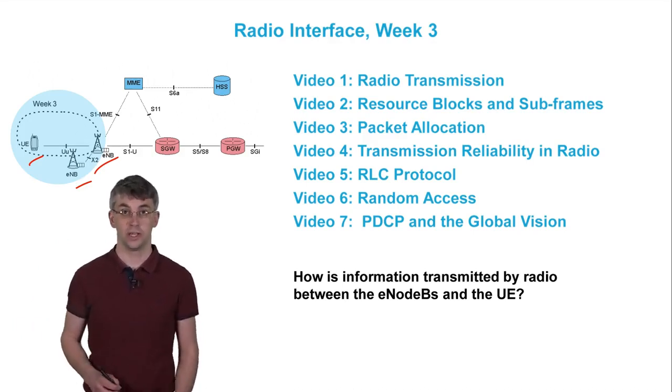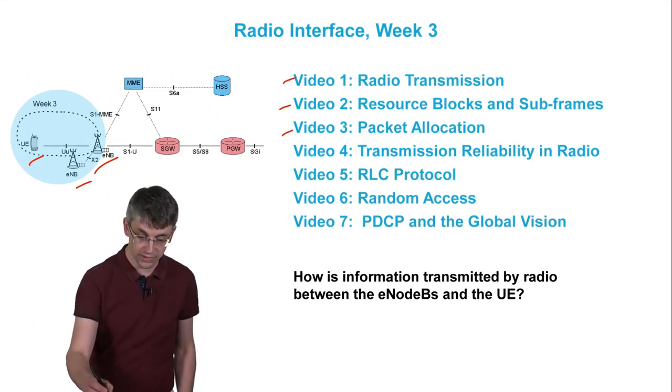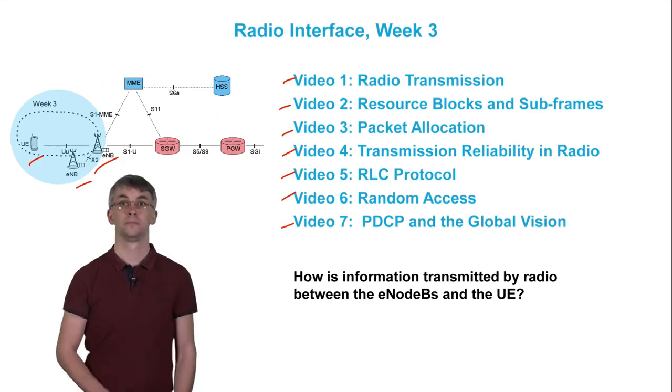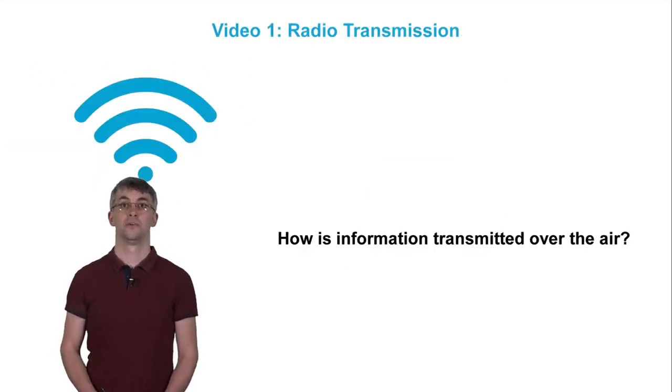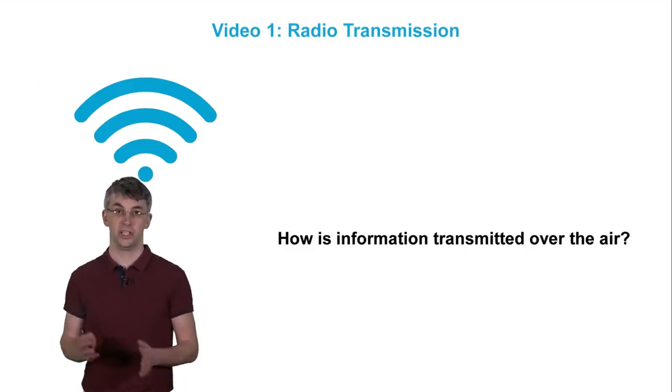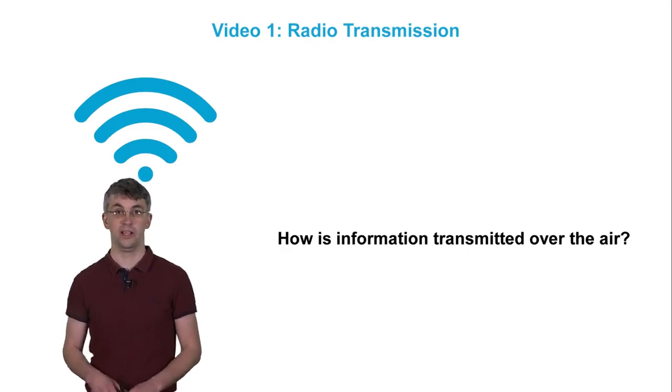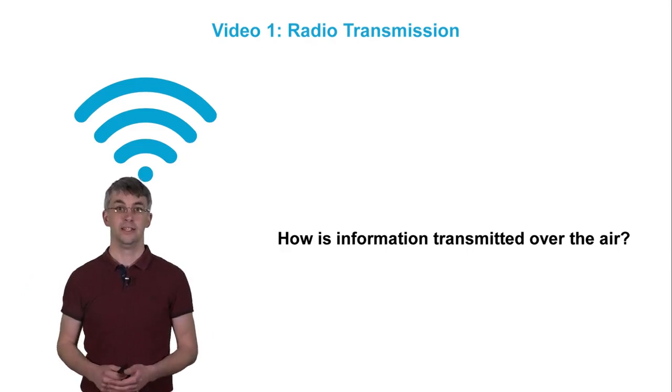Each video of this week will present one of these layers. Let's start with the first one, the physical layer. The goal of this layer is to transfer binary messages between two points, namely an E0B and a UE. For that, LTE uses modulation and error correction techniques. We will explain these notions.